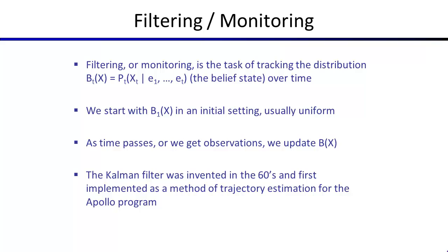We talked about forward simulation in a Markov chain; now we'll talk about how to keep track of what you believe about the state variable as evidence comes in and time passes — this builds up the full forward algorithm. The task is to figure out at any given time what you believe is happening in the hidden state given all evidence from the first time step up to the current time. You start with an initial belief — often uniform — and update as time passes and observations arrive.